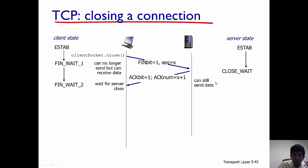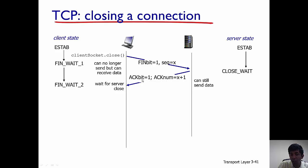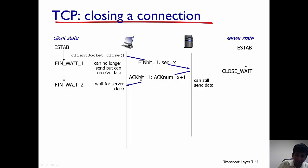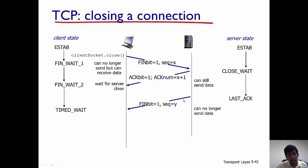The server responds to this and acknowledges receipt of the FIN by sending a segment with the acknowledgement bit set to one and the acknowledgement number set to X plus one. Note that there is an acknowledgement bit and a separate acknowledgement number. Once the acknowledgement bit is set to one, the client can no longer send data and is waiting for the server to close.